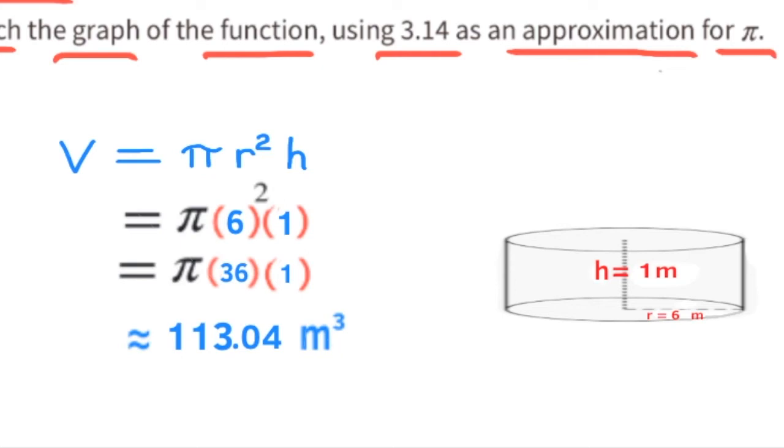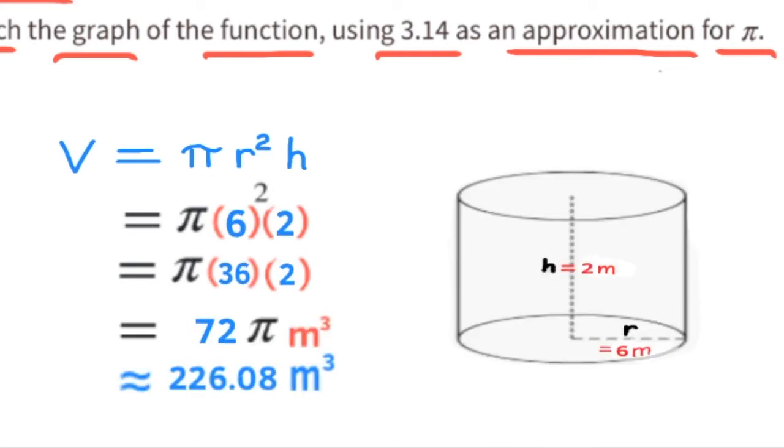If we doubled the height of the cylinder from 1 meter to 2 meters, then the volume would also double, making the volume 226.08 meters cubed, because 3.14 times 36 times 2 equals 226.08. And I'll also show that point on the graph.